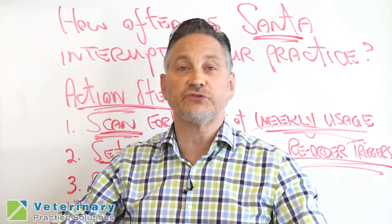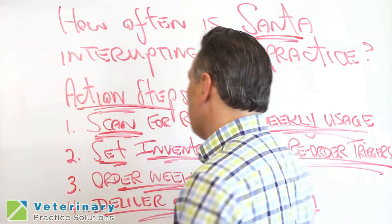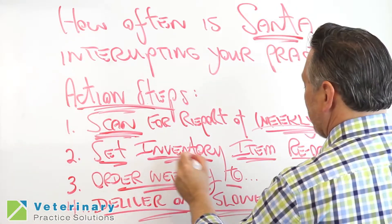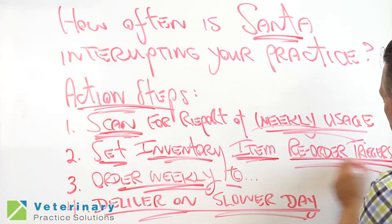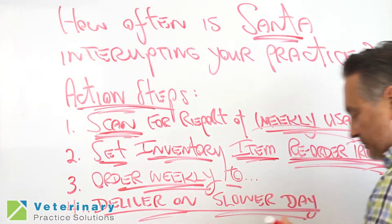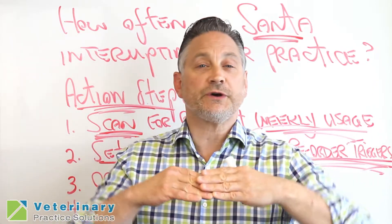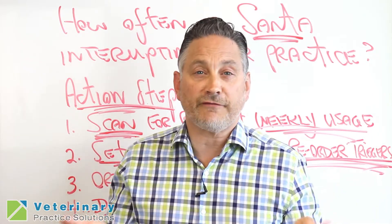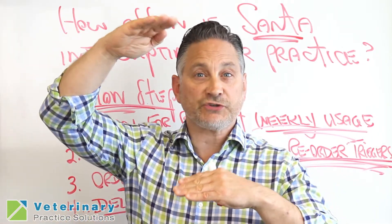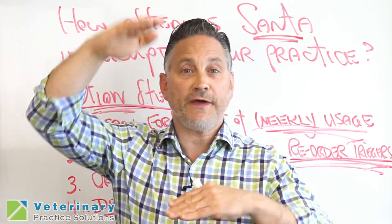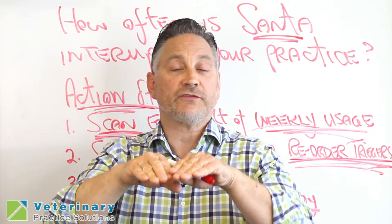Find out how much you've used approximately on a weekly basis. You then want to set your inventory items to your reorder trigger points, which is the low part of your inventory. In the software, you're going to set a maximum — which is what you're going to order up to — and then you're going to set a minimum reorder point.